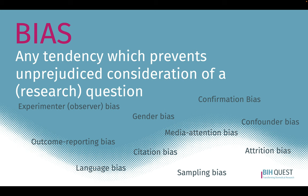Media attention bias means we tend to cite or believe certain publications much more if they are covered heavily by media. Confirmation bias means we have a certain prejudice — we know a drug must work, so we only select studies that confirm this, or only believe experiments that again confirm our existing bias. They come in many varieties, but today I will focus on two that really influence our experimental design and outcomes very often.